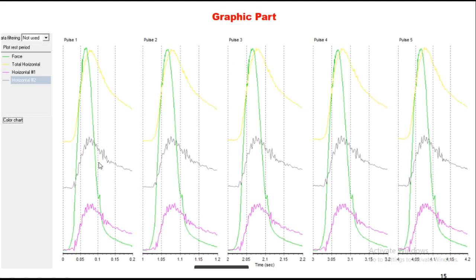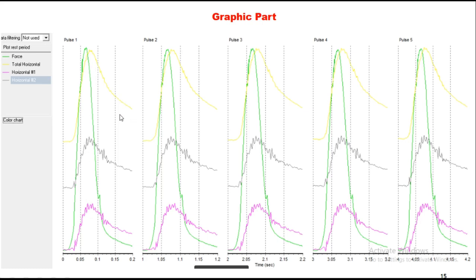The total deformation is shown by the yellow line, with deformation number one and two summing to the total. Different equations are used to estimate Poisson's ratio depending on whether you use a 100 mm or 150 mm specimen. For a 100 mm sample, mu = 3.59 × h/v − 0.27.